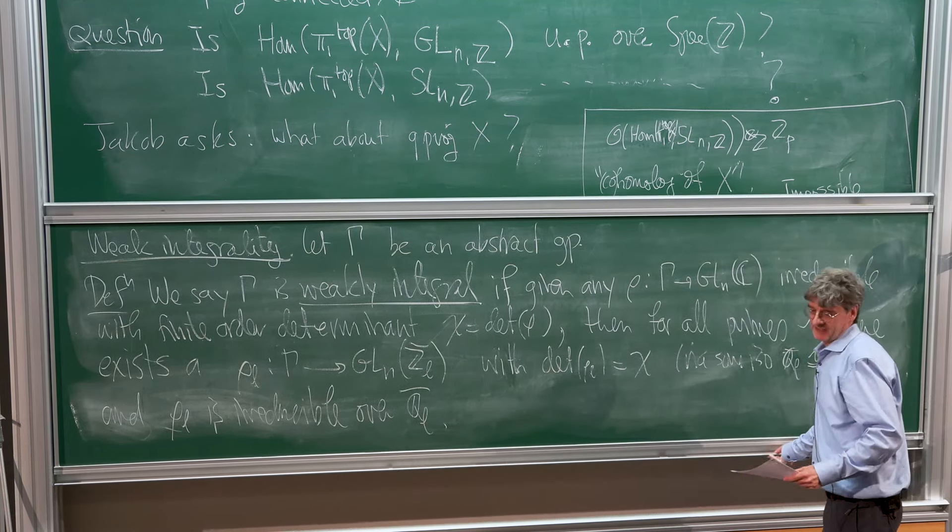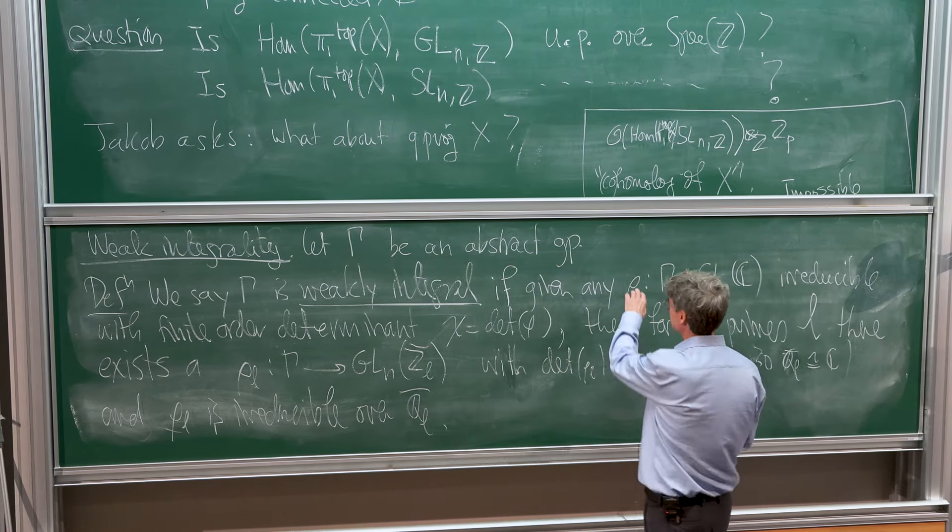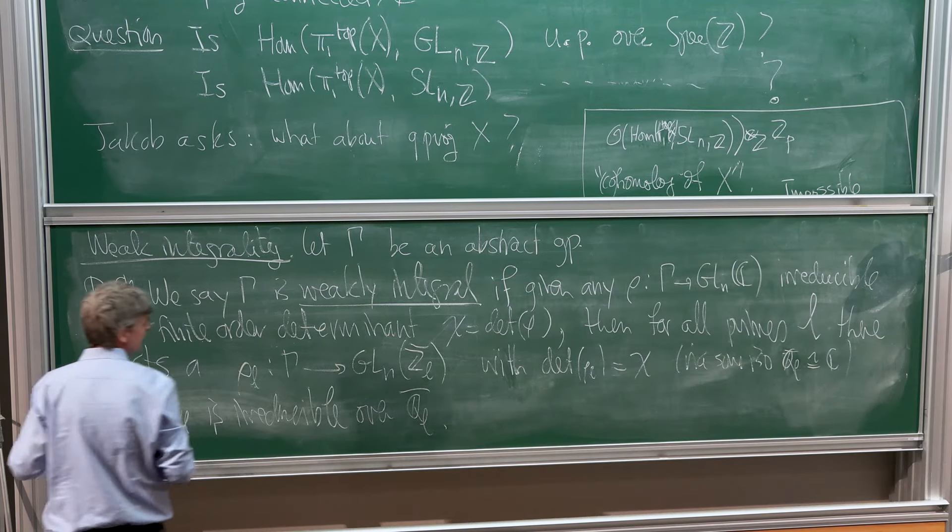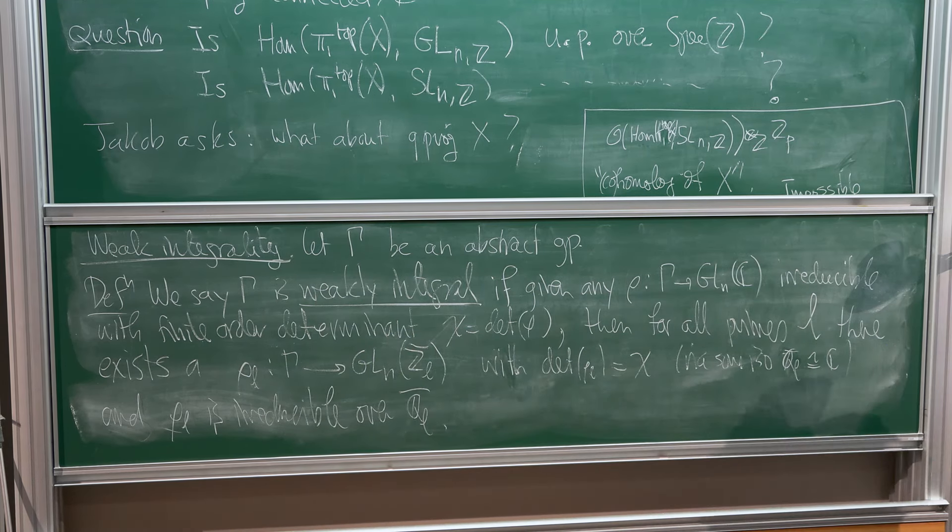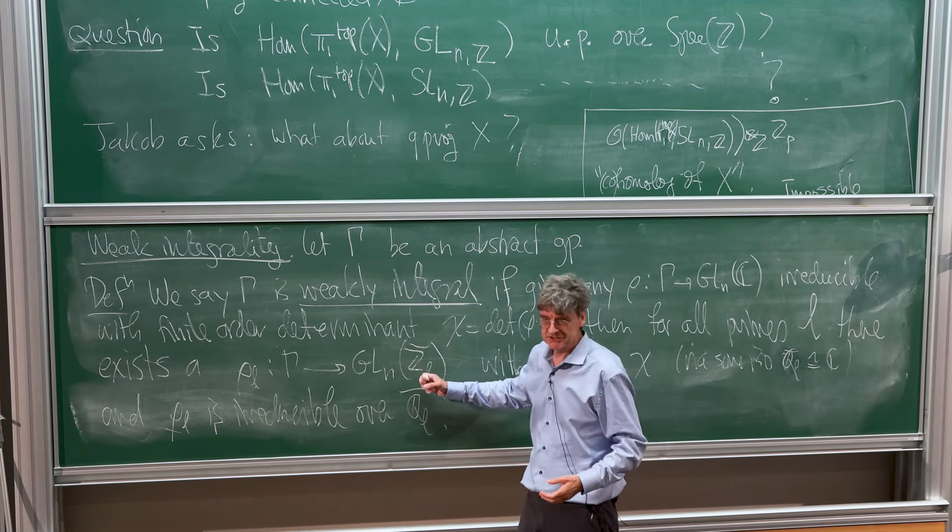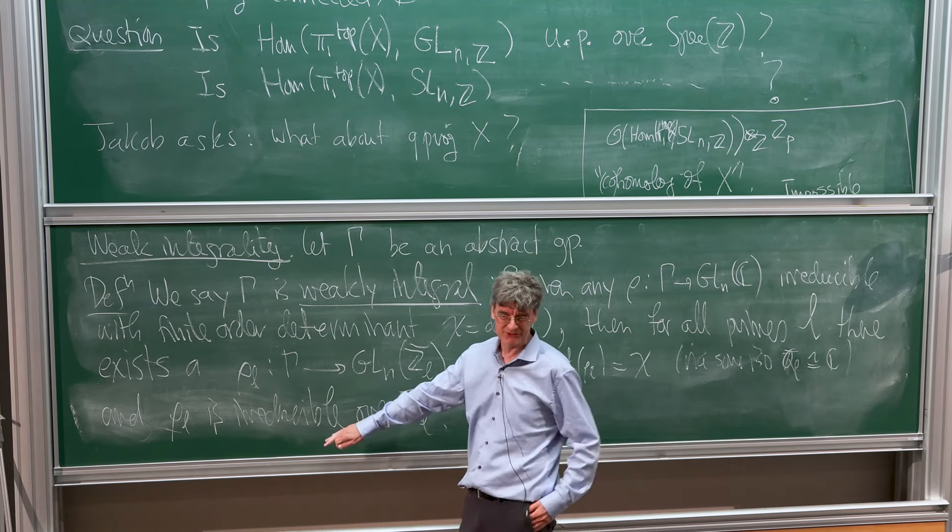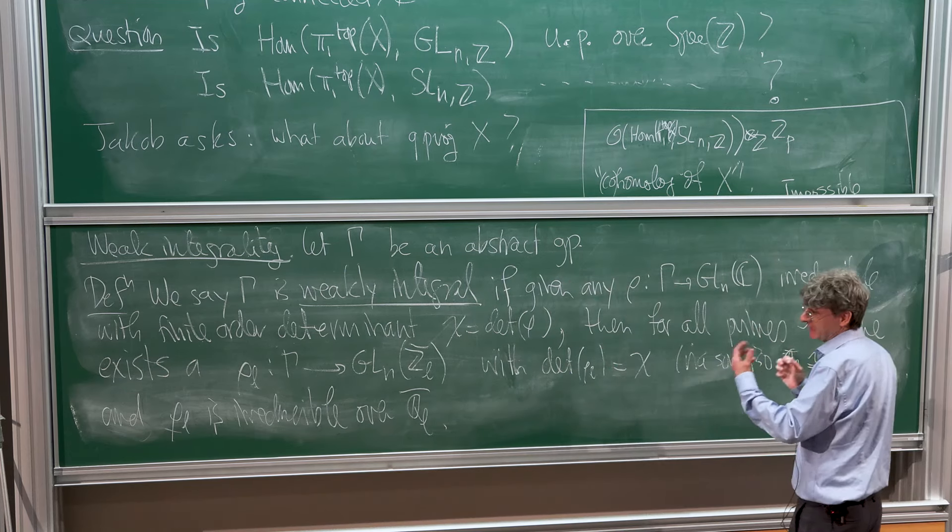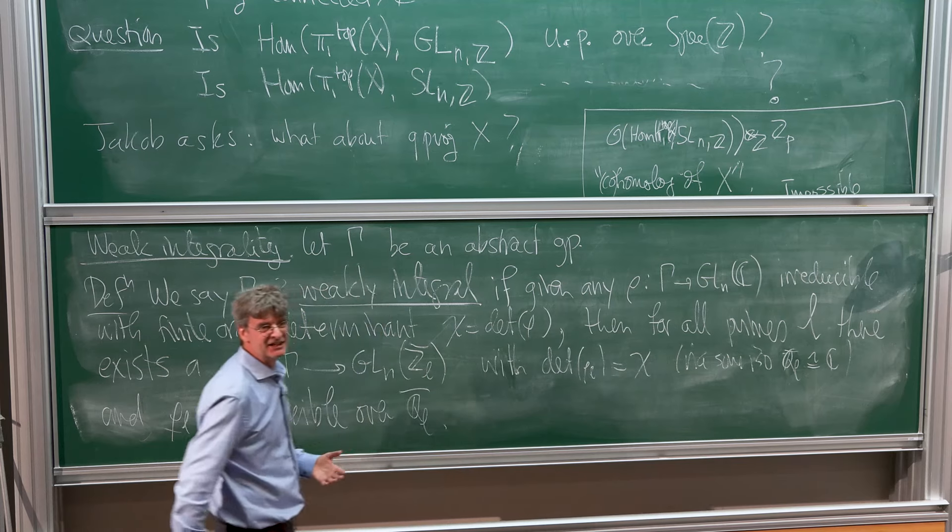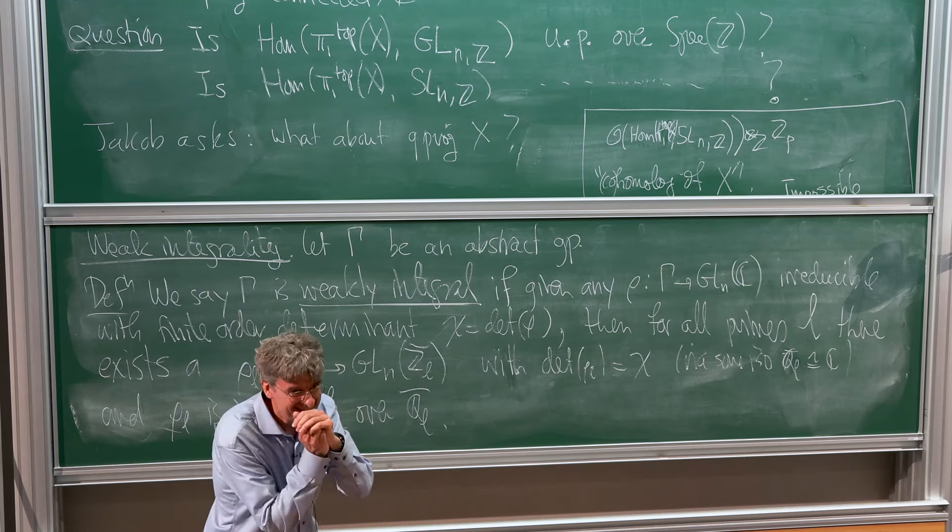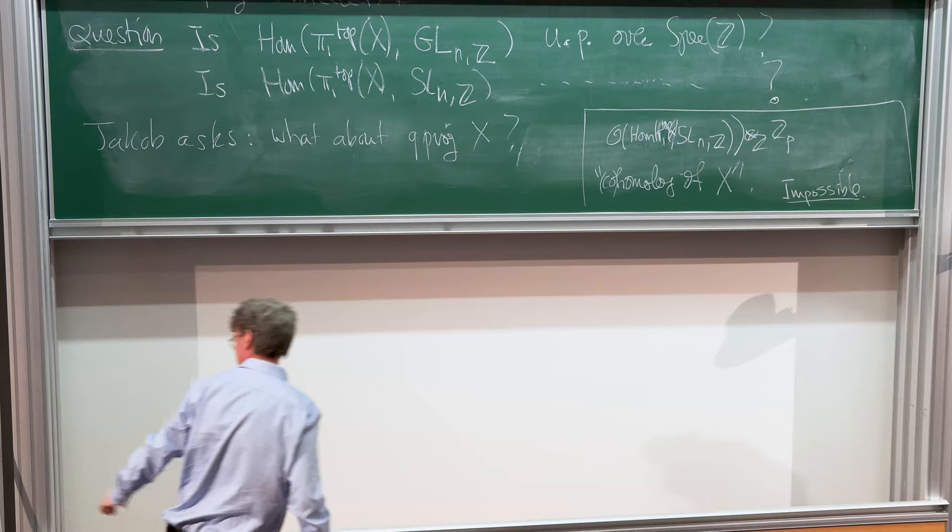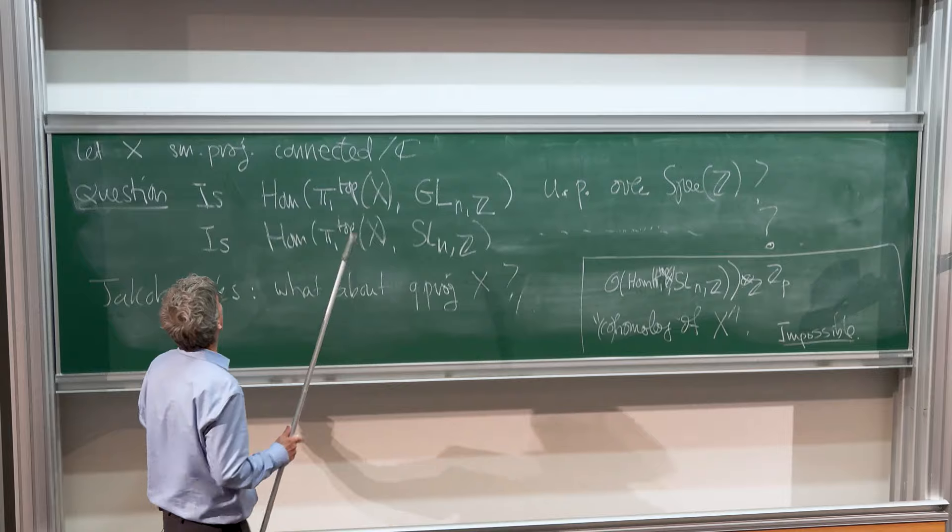The point is there's no relation besides the determinant property between the rho's and the rho L. In terms of the moduli space picture, it's saying there's an irreducible component which dominates spec Z and consists mostly of irreducible guys. Then you can find a ZL bar point of that component for every L which hits the irreducible locus. But not in the same component, just in the overall scheme.